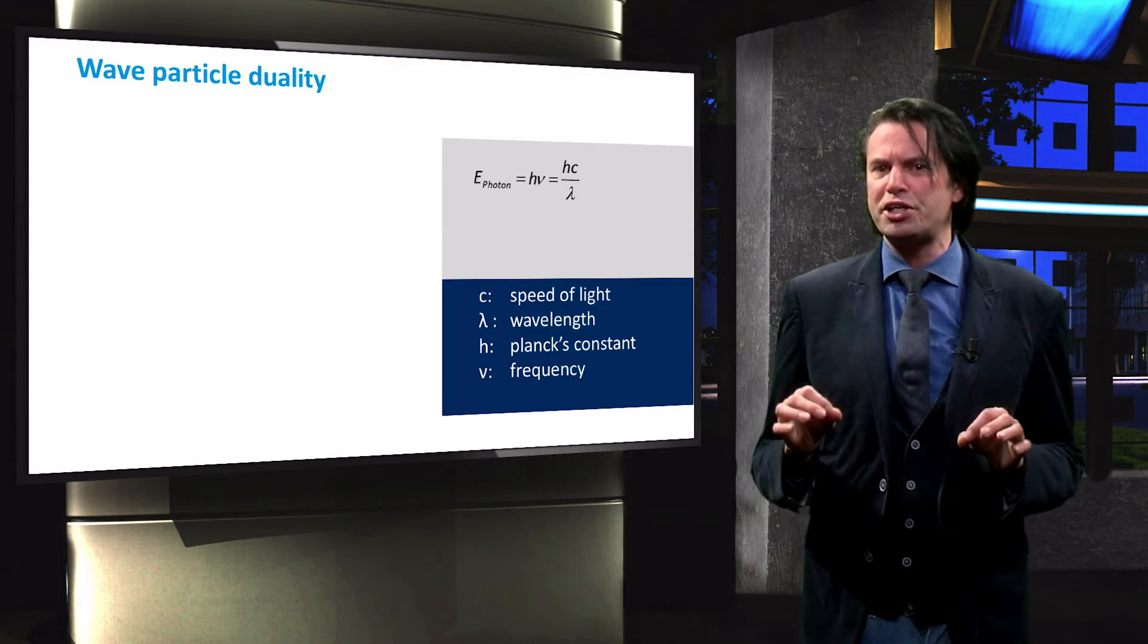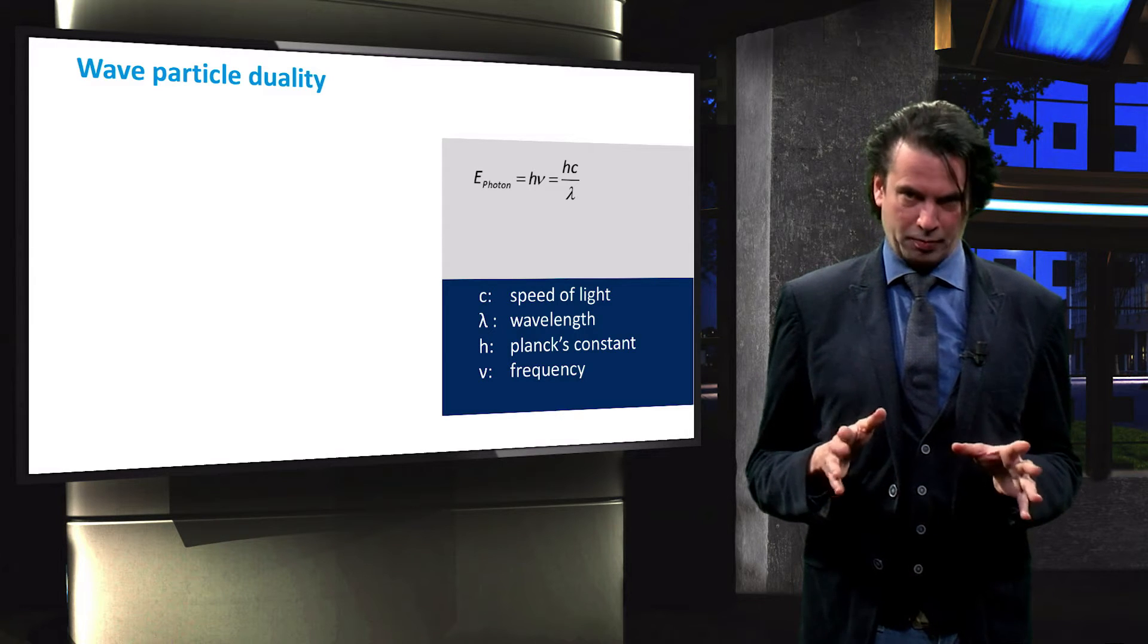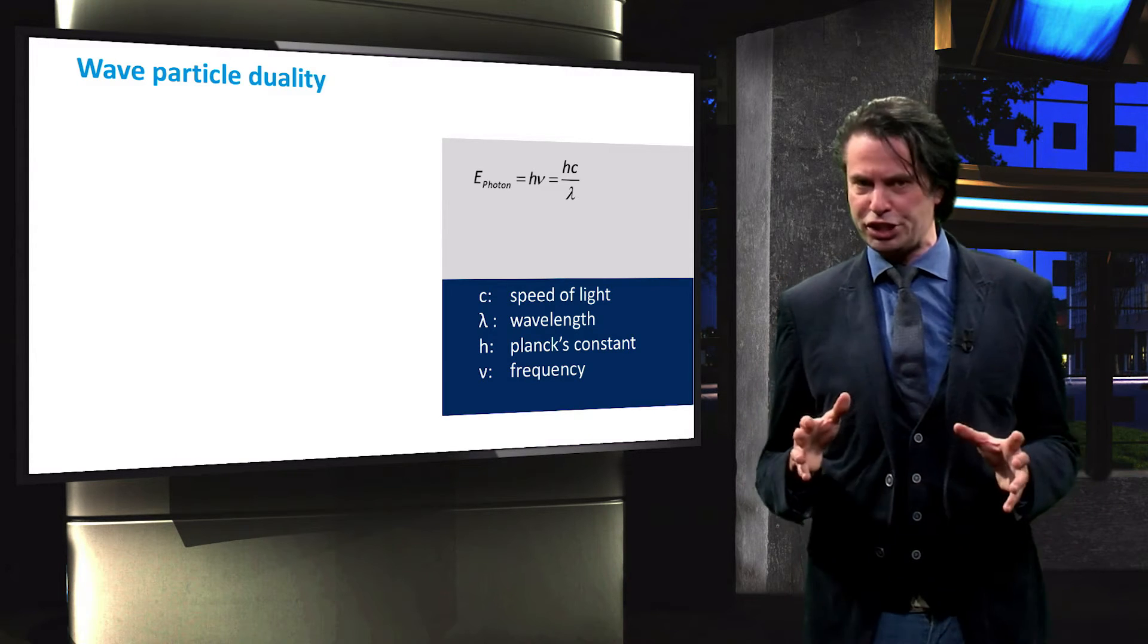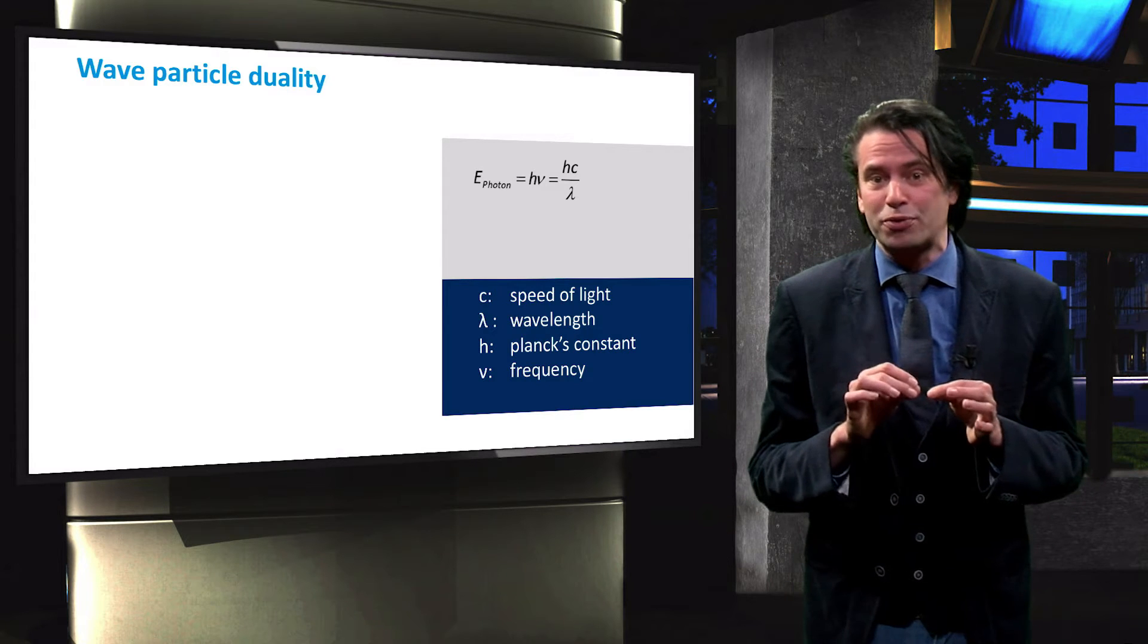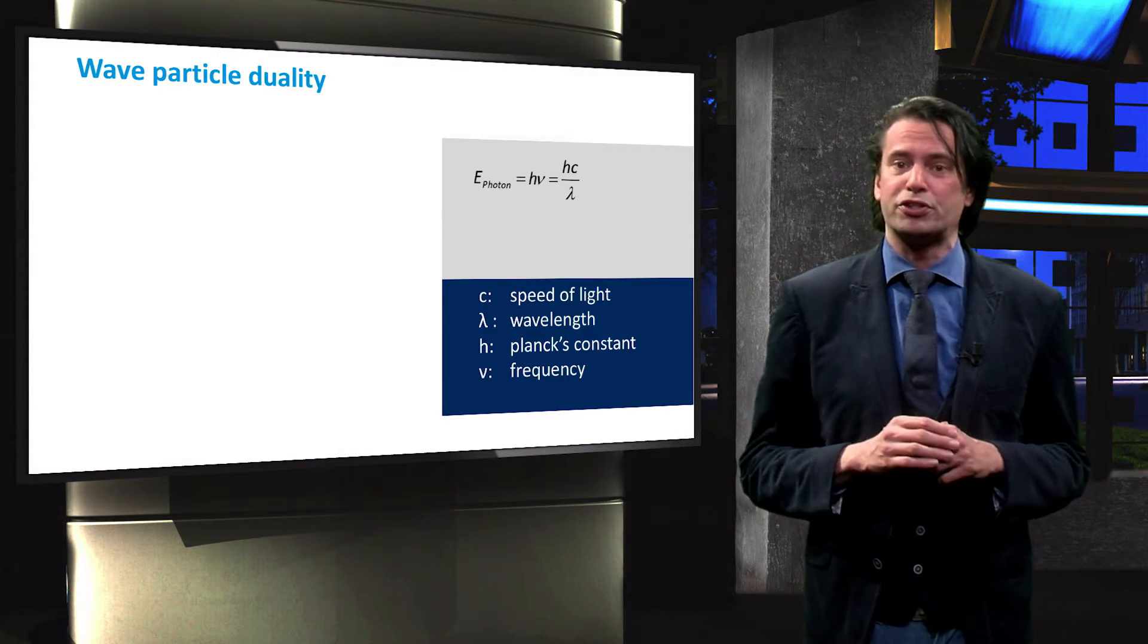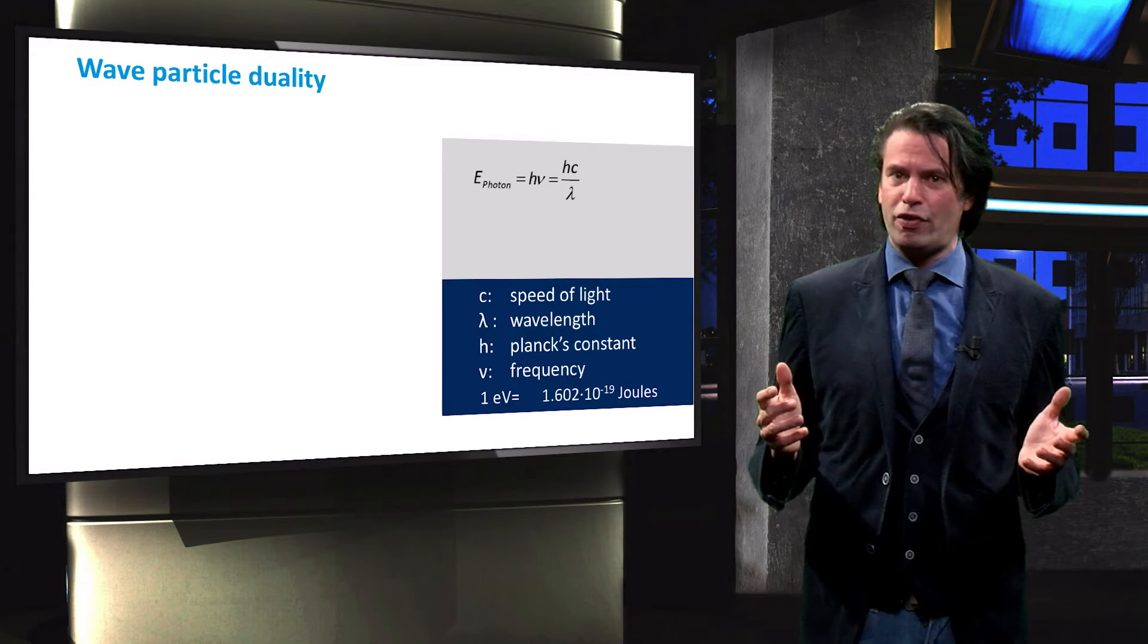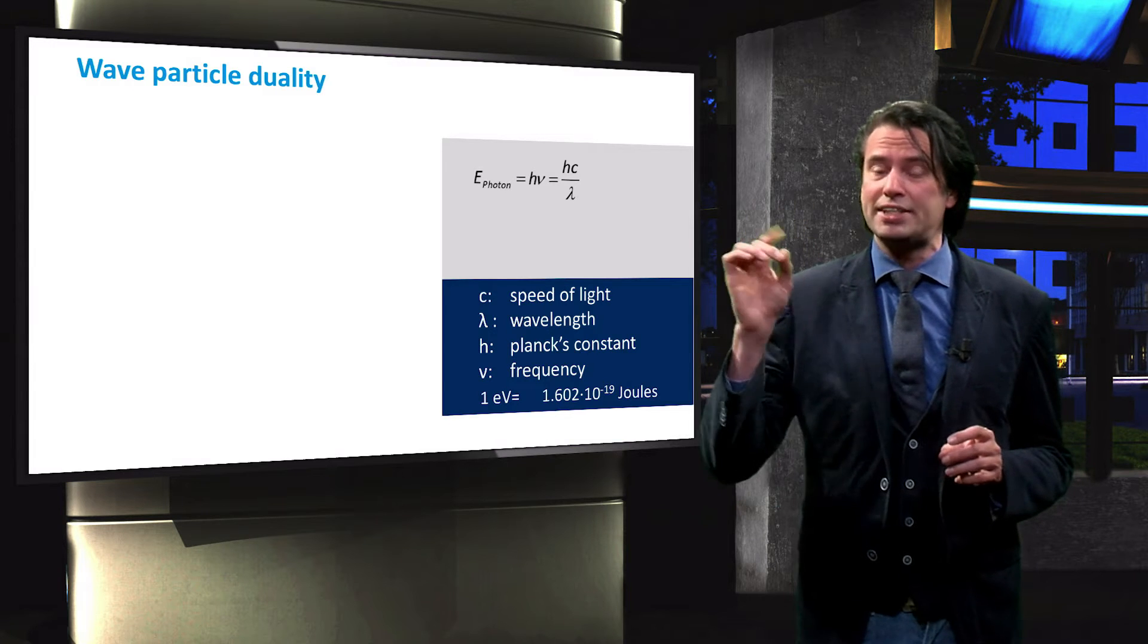There are a number of units in which the photon energy and wavelength can be expressed. In the field of photovoltaics, we generally express the energy in electron volts, which is equal to the energy of one electron moving across a potential difference of one volt. One electron volt therefore equals 1.6 times 10 to the power minus 19 joules.